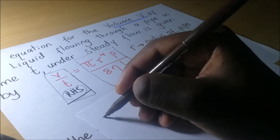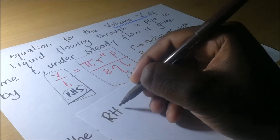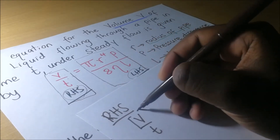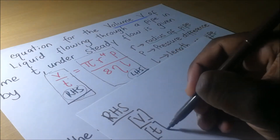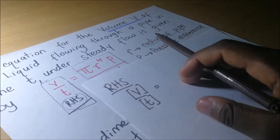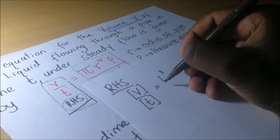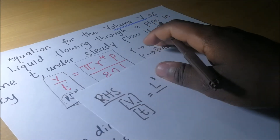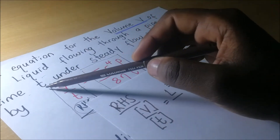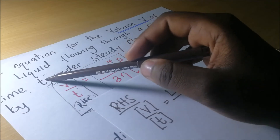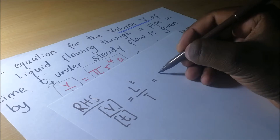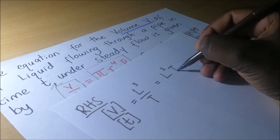I'll begin with the dimensions on the right-hand side. On the right-hand side, we have V over T. We want the dimensions of V and the dimensions of T. V is described as volume, so volume is L to the power 3, divided by T, which is time. So that's L cubed over T, and definitely this is the same as saying L cubed T to the power negative 1. These are the dimensions on the right-hand side of this equation.